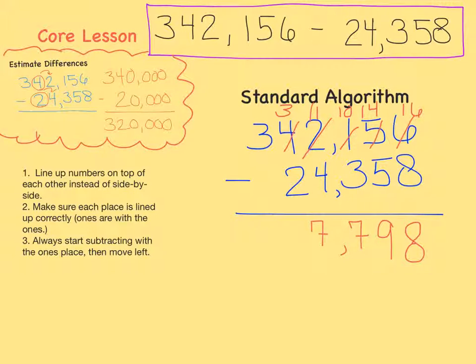Now let's subtract the ten thousands place. 3 minus 2 equals 1. And finally, we're left with just the 3 in the hundred thousands place. Since we're not subtracting anything, 3 minus nothing equals 3.